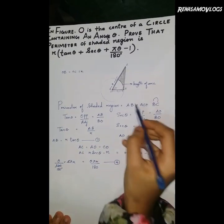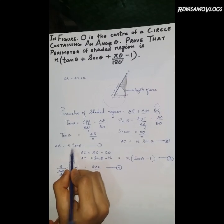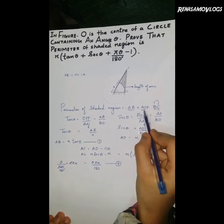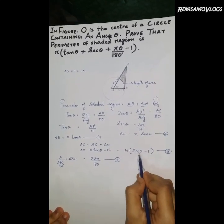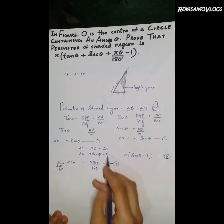Perimeter of the shaded region is AB, AC, and length of arc BC. So AB is R tan theta, AC is R times sec theta minus 1, and BC is theta pi R by 180 degrees.